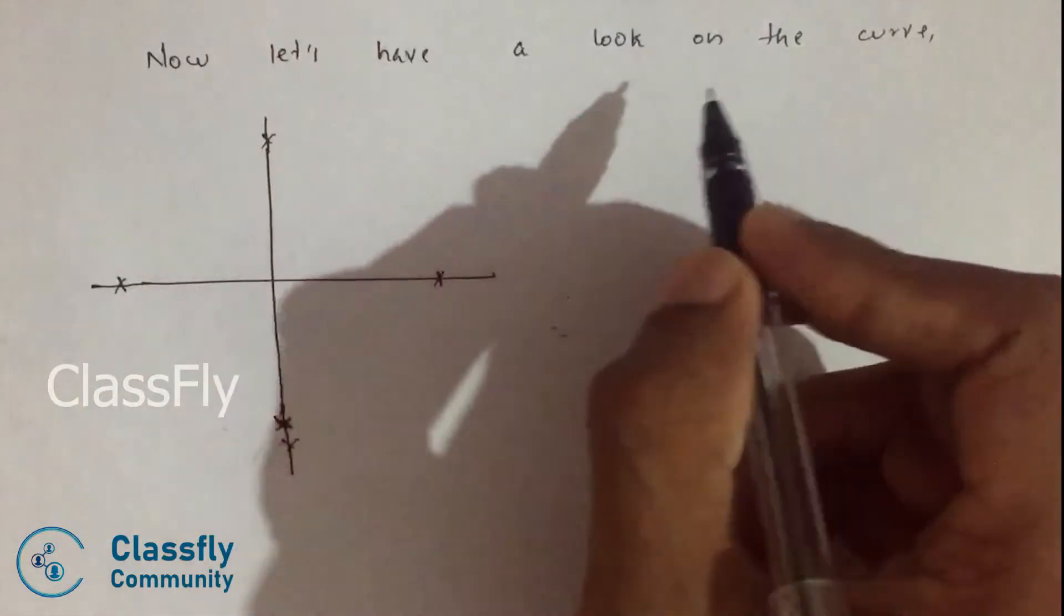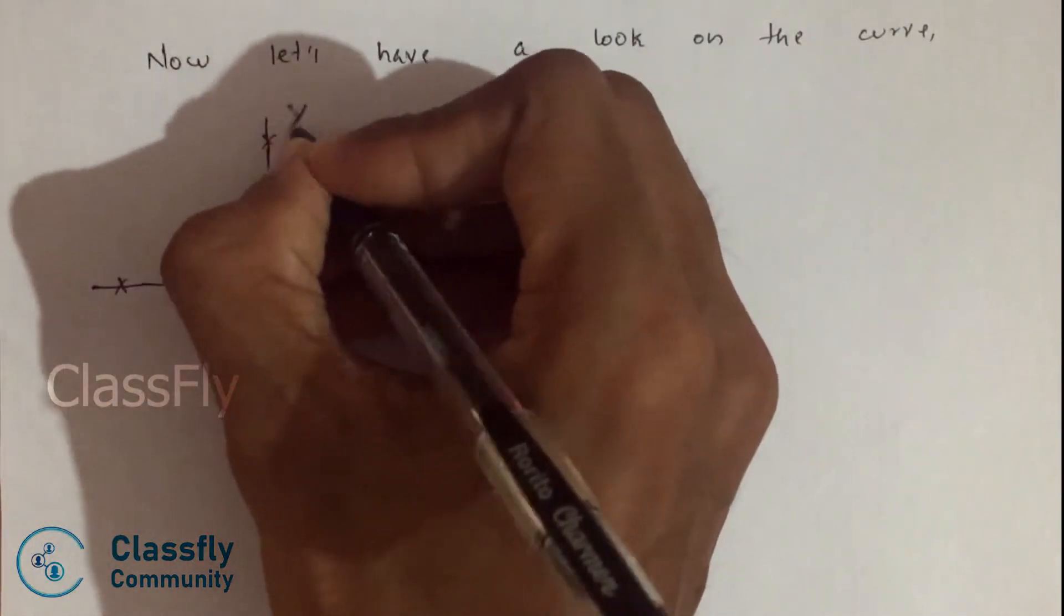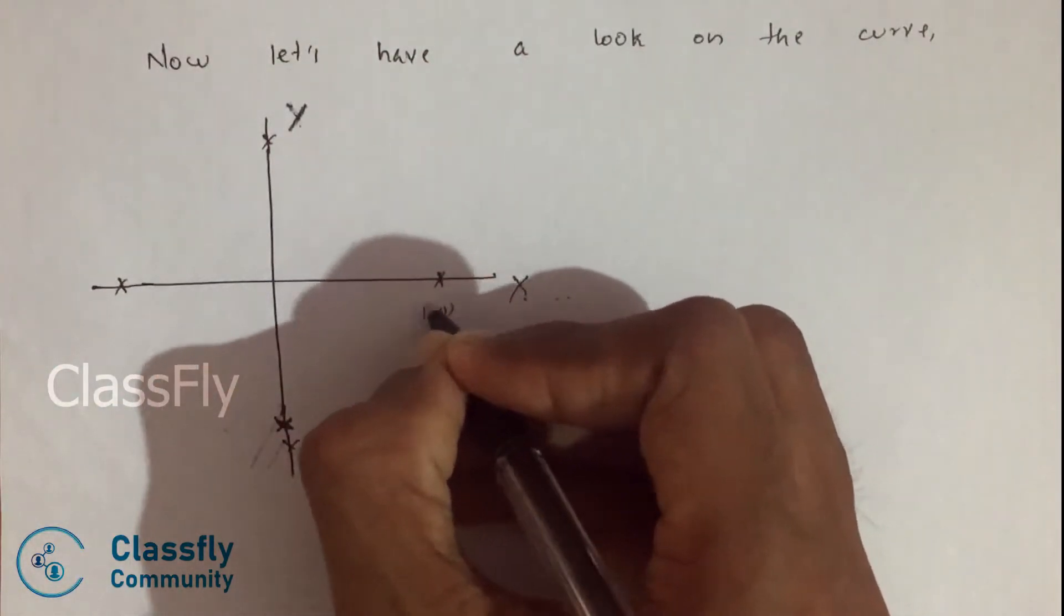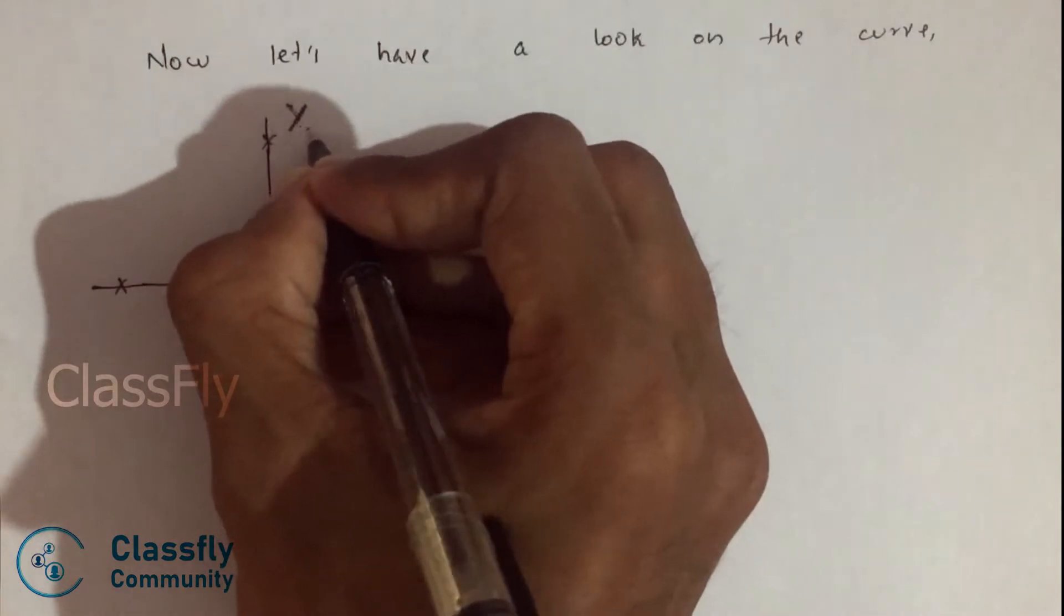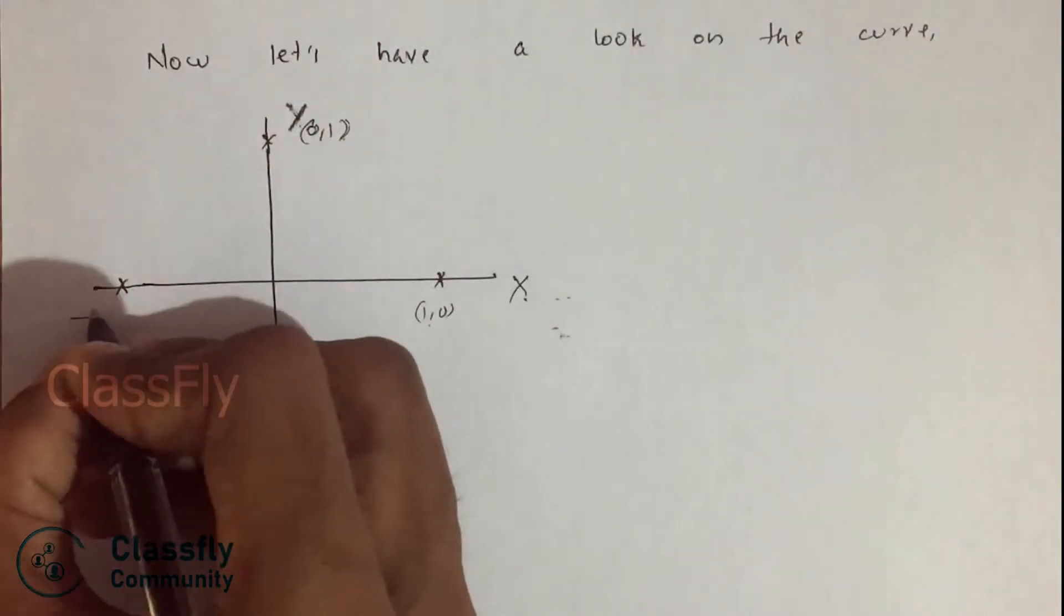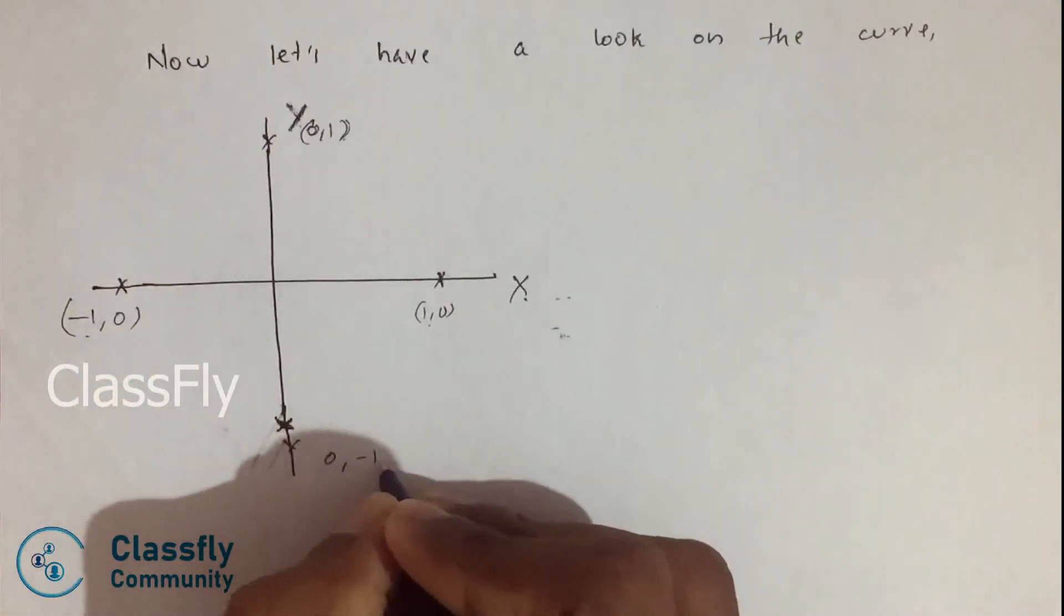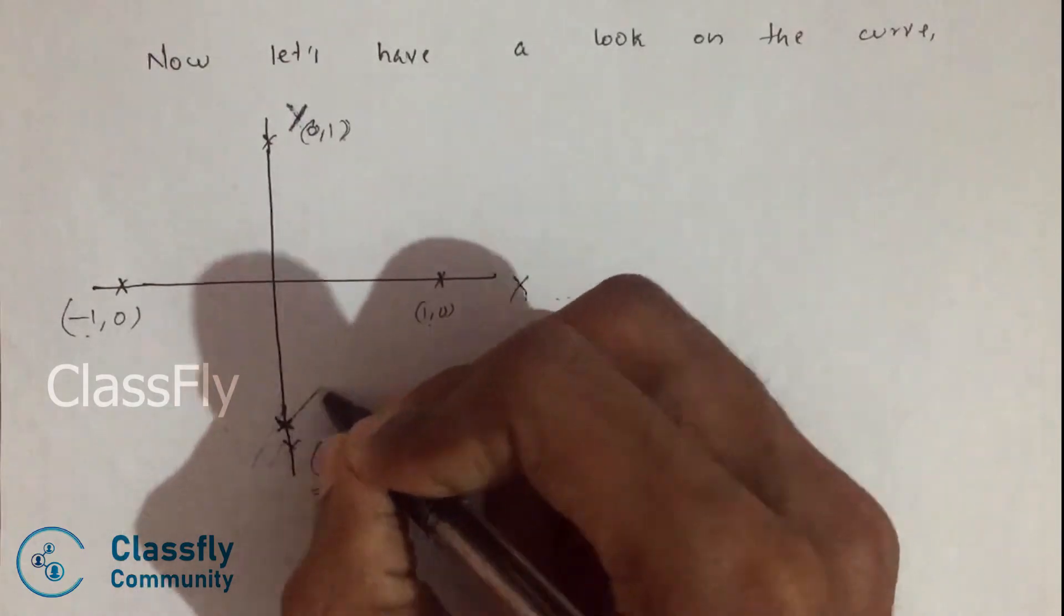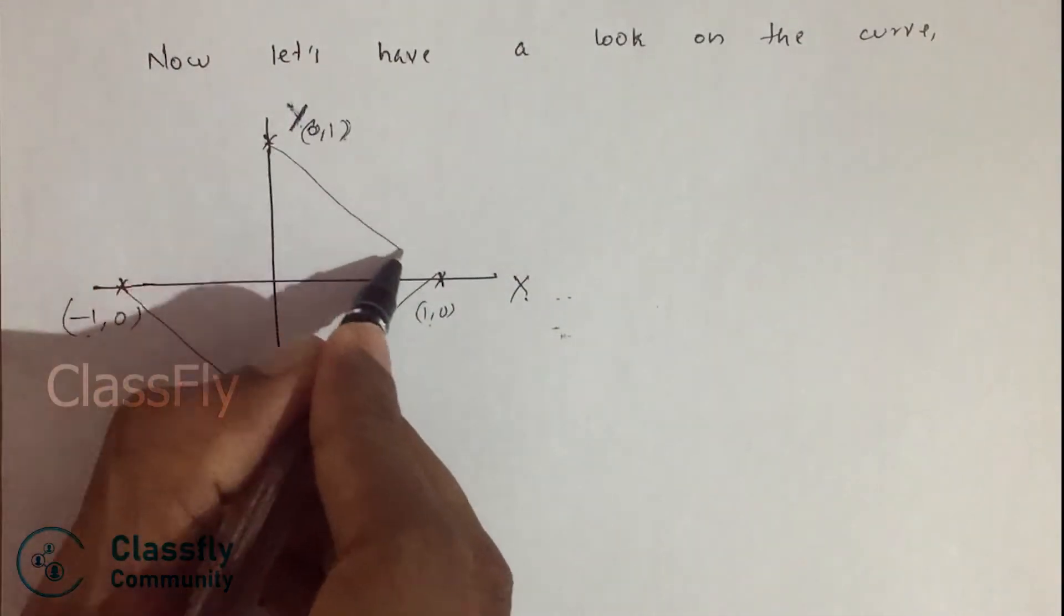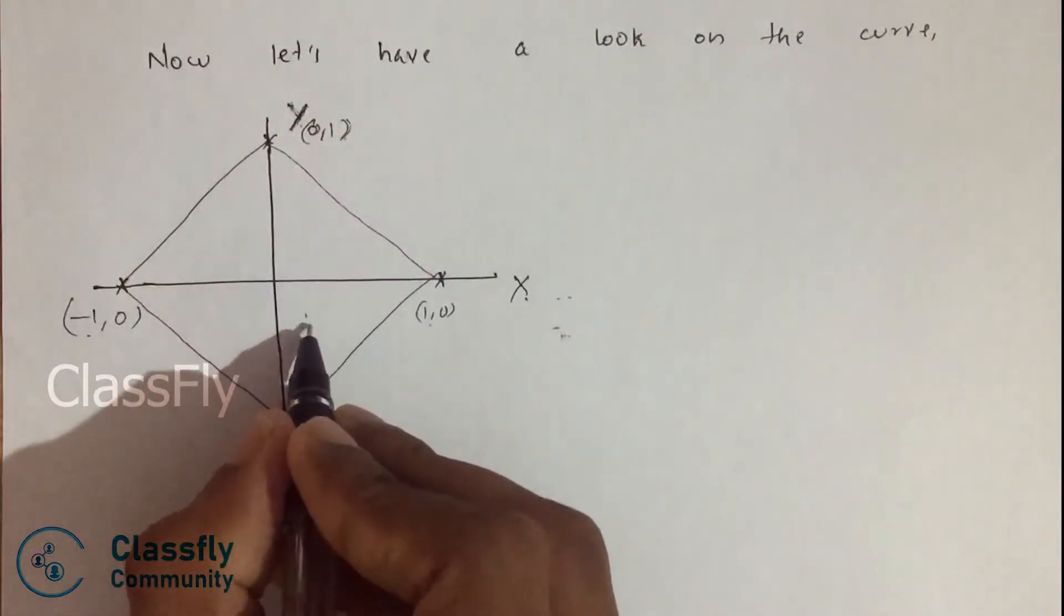Now let's have a look on the curve. So this is the x axis and this is the y axis. We have the point here (1,0), here it's (0,1), and here it's (0,-1). So let's join this all. So this is the curve.